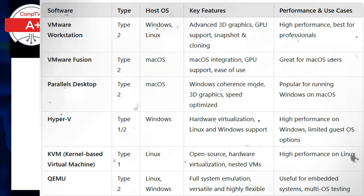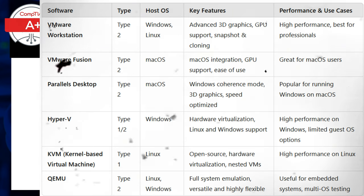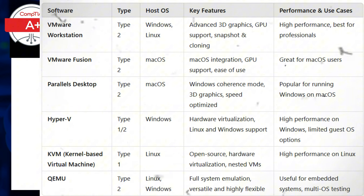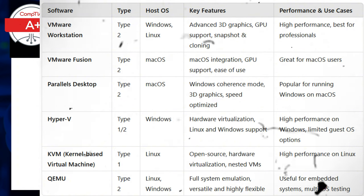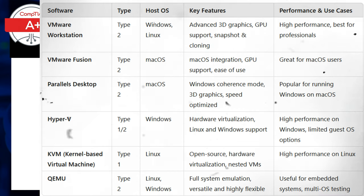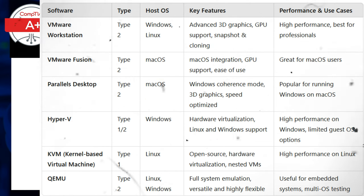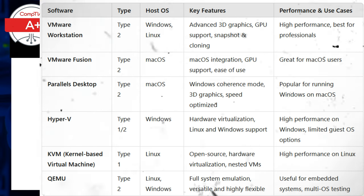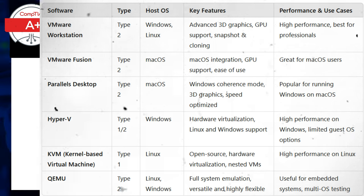However, VMware Workstation and Fusion might be preferred for professional environments requiring advanced graphics, more stable 3D support, and powerful snapshot features. Meanwhile, Hyper-V and KVM would suit enterprise-grade or cloud environments needing high performance, especially where Linux or Windows hosts dominate.